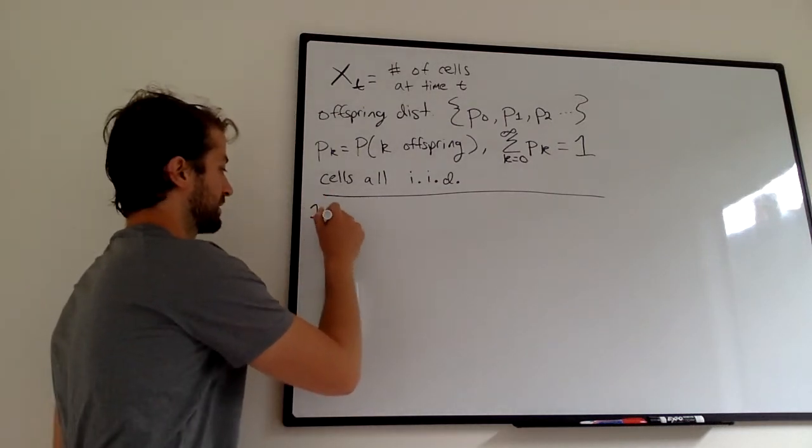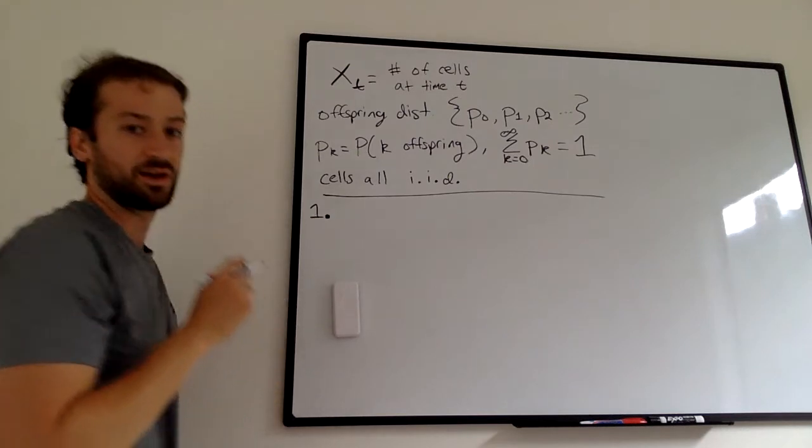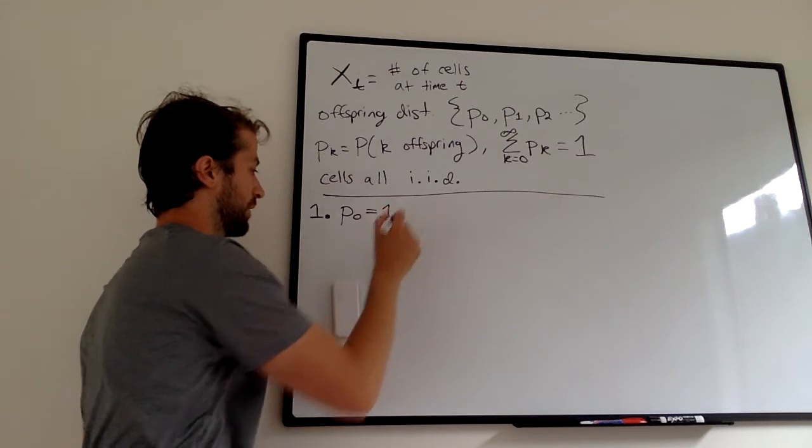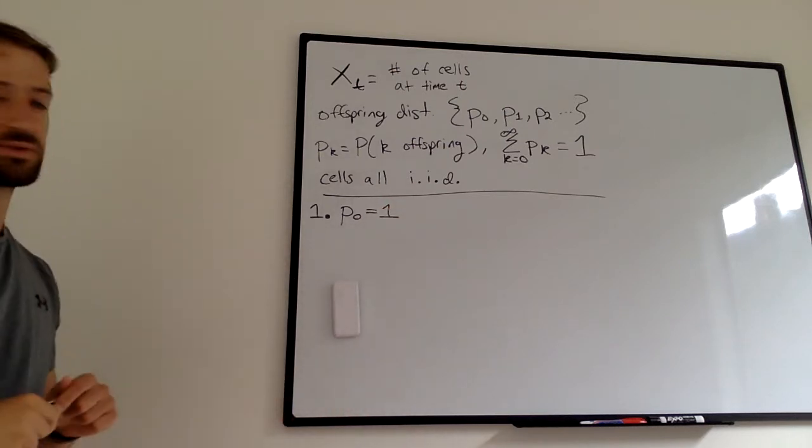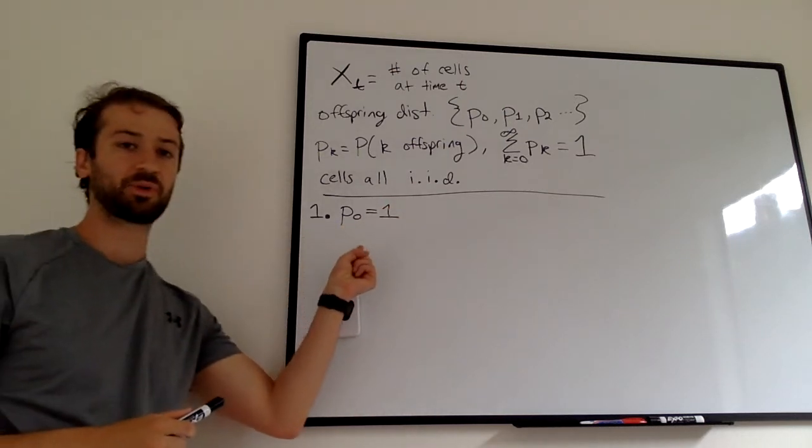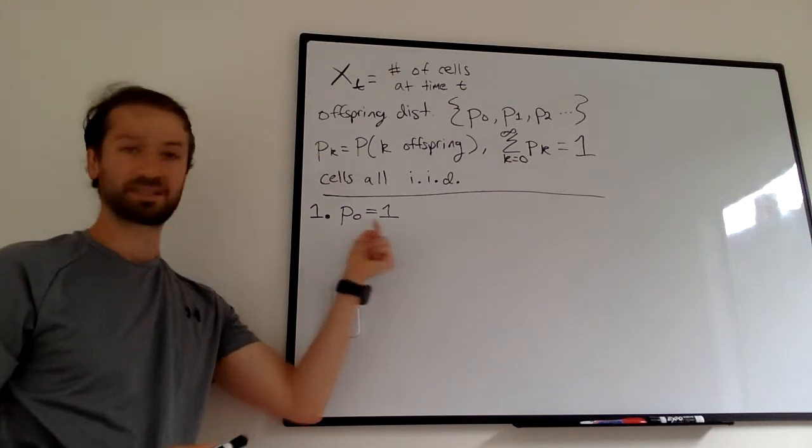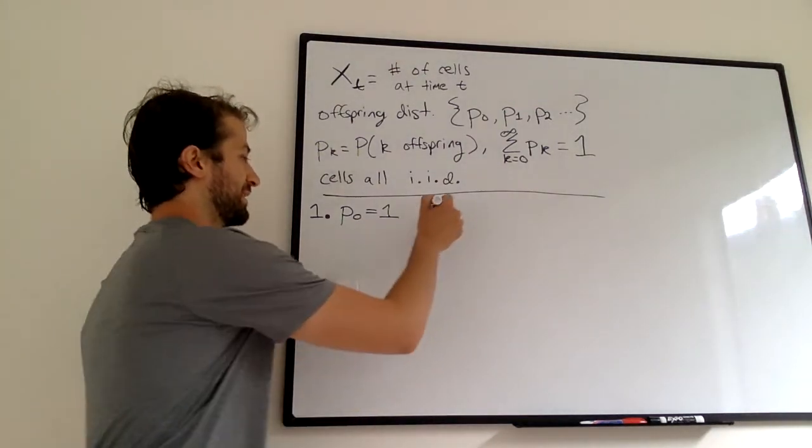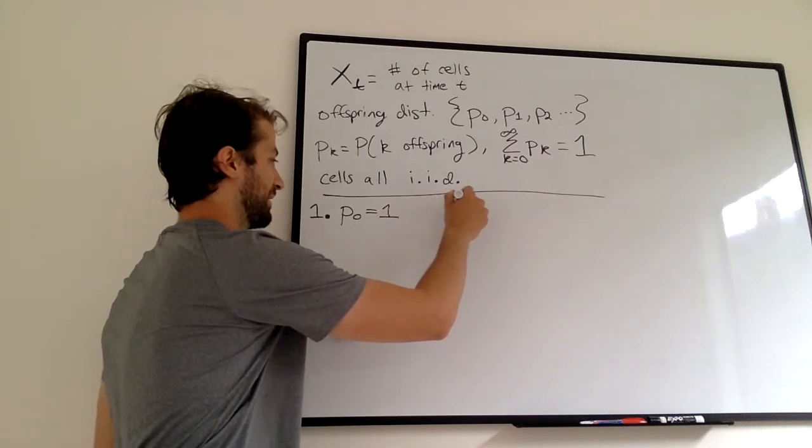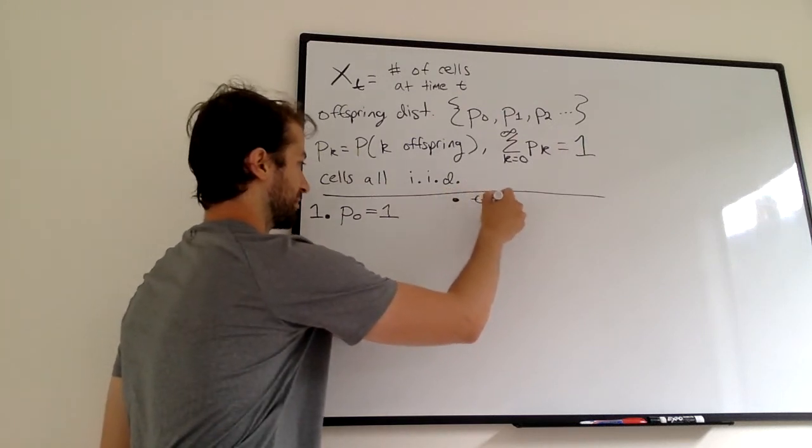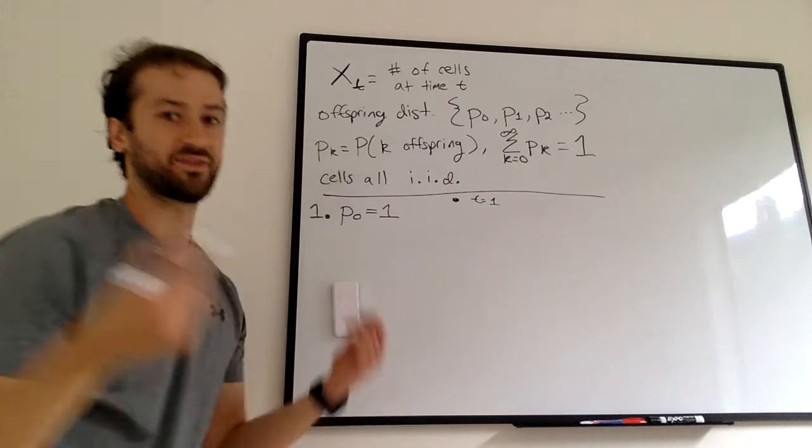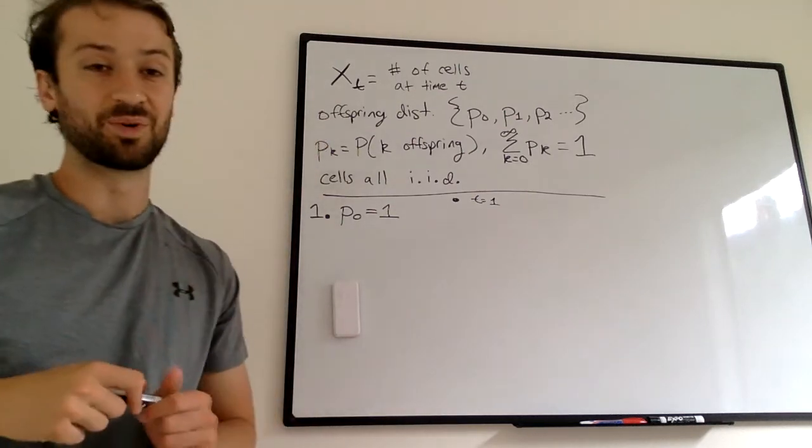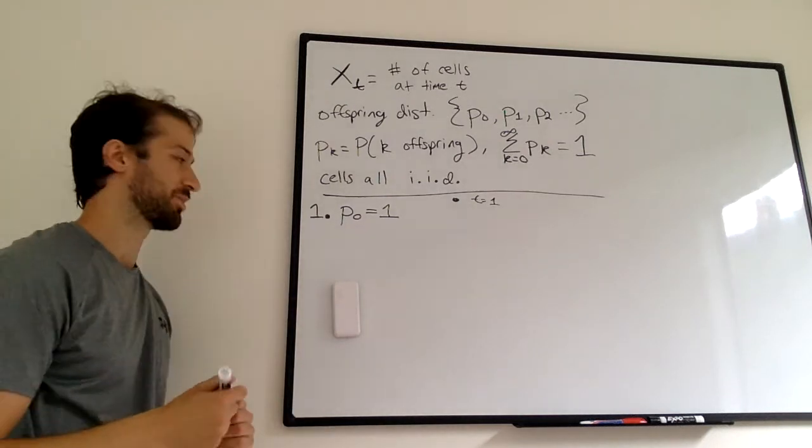Let's define our first branching process, a very simple one. P sub 0 equals 1. Remember, P sub 0 means the probability of no offspring. In this case, we just set it to 1. And this is a very sad and boring example - we just have our cell at time T equals 1, and it has no offspring with probability 1. So the population dies out right away. That's a very simple and not exciting branching process.